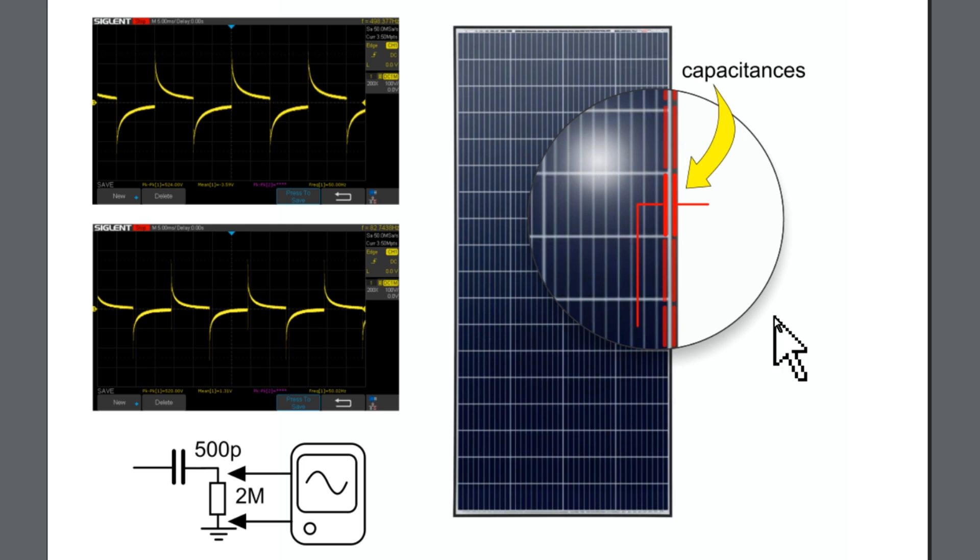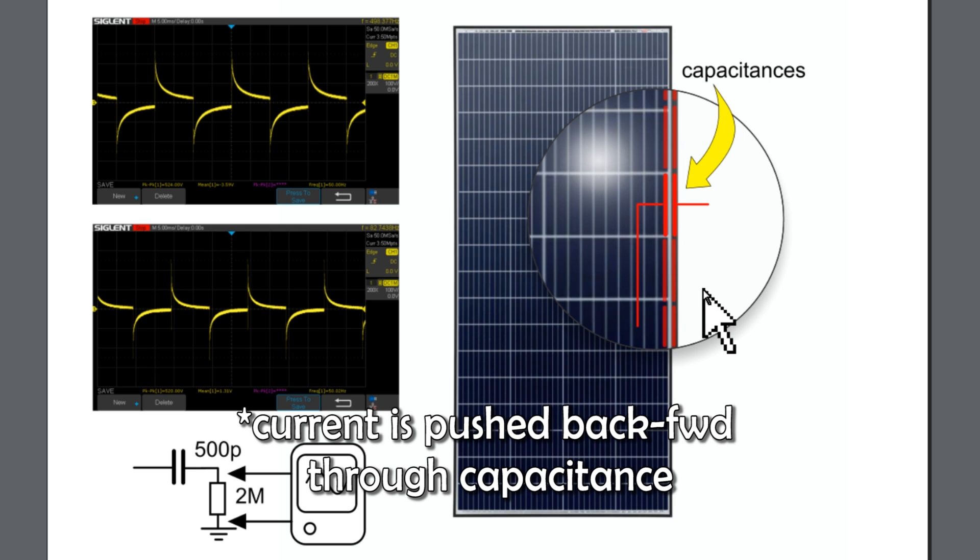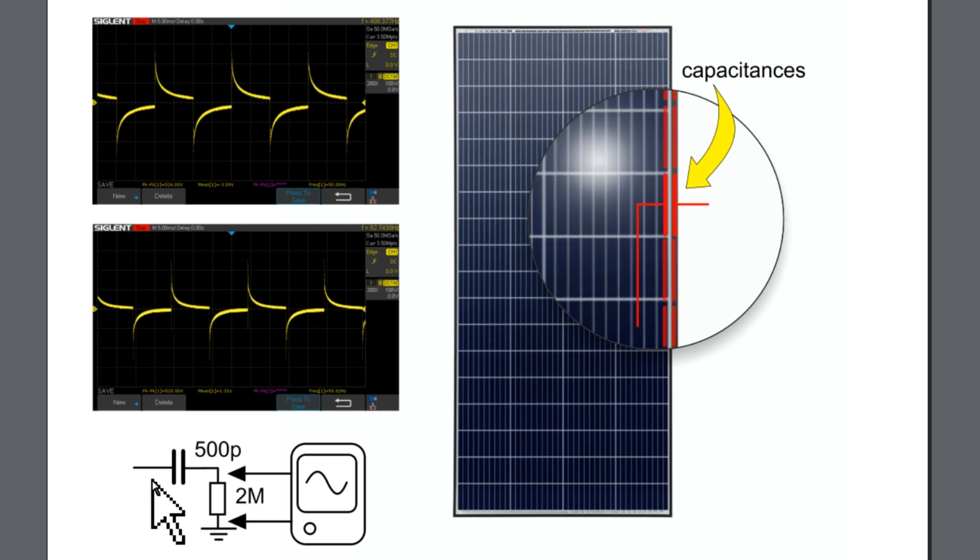And if this point is connected to ground, here we have a current that will flow through this capacitor. It can be seen in this way, here we have this capacitor that is the capacitance that we have here across the edge of the cells and the frame of the panels.